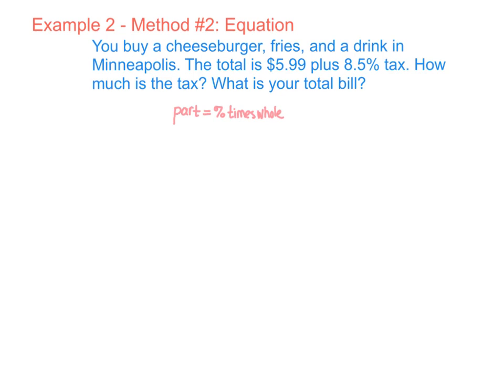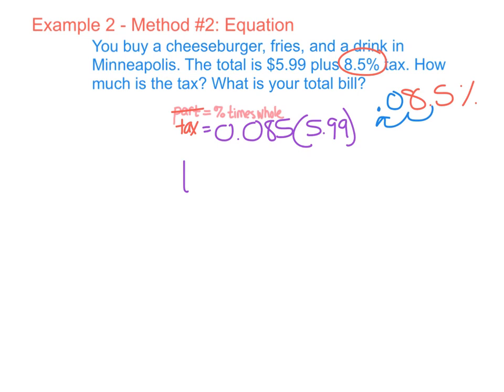Alright, if you're someone who prefers the equation, you might like this one better. So same problem, we're looking for our tax here, which is our part. Our percent has to be written as a decimal. So we have 8.5%. To turn that into a decimal, remember, I move two places to the left. Fill in a zero where I need it. So my tax is equal to 0.085 times my whole, which is $5.99. And I do 0.085 times $5.99 and I'm going to get that same answer. Here, my tax is equal to 0.50915, which is $0.51.